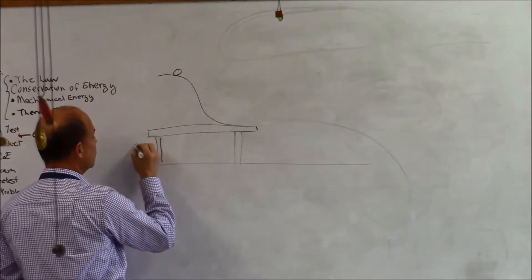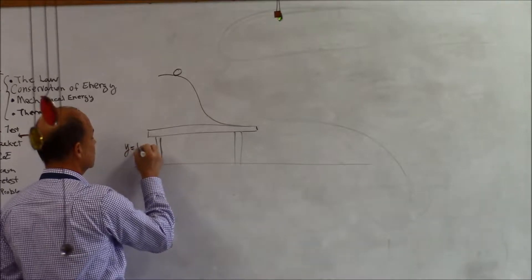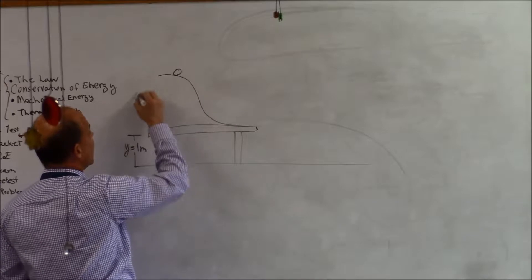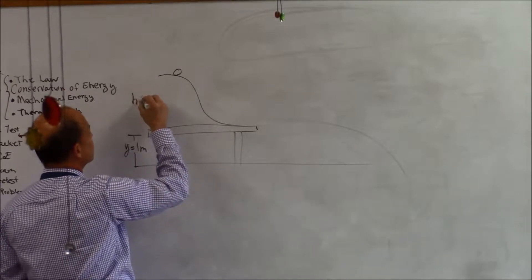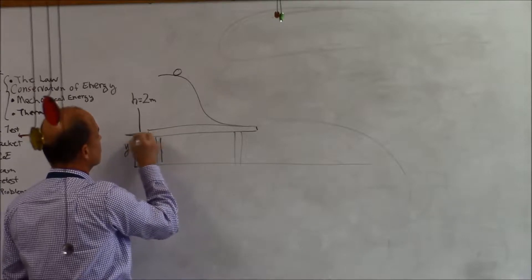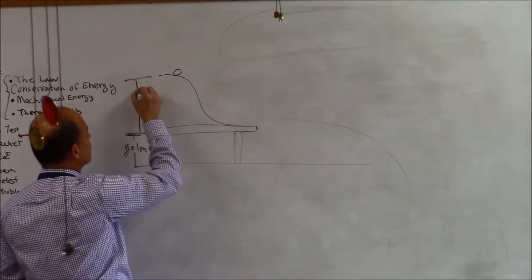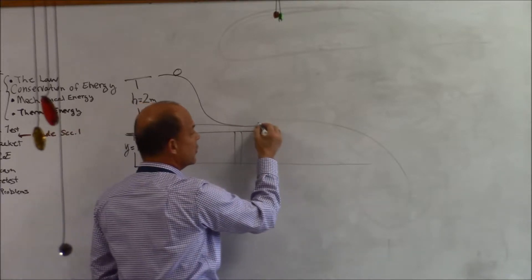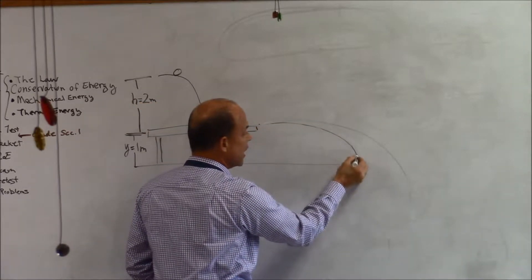Let's say that the table is one meter above the ground and that the height of the ramp is two meters. The ball is going to roll down the ramp, it's going to go into projectile motion.